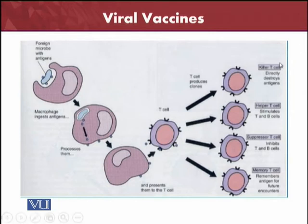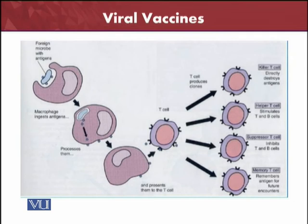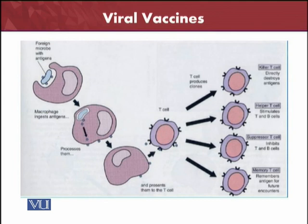Here you can see the killer T cells, helper T cells, suppressor T cells, and the memory T cells. All of them have different functions. The killer T cells directly destroy the antigen — that's why they are called killer T cells. The helper T cells stimulate the T and B cells inside the body. The suppressor T cells inhibit the T and B cells. The memory cells are the most important from the vaccination point of view — they are capable of remembering the antigen for future encounters, which is the important thing for vaccine purposes.